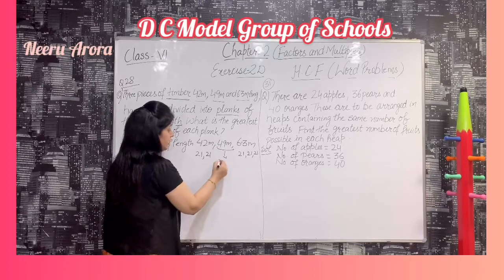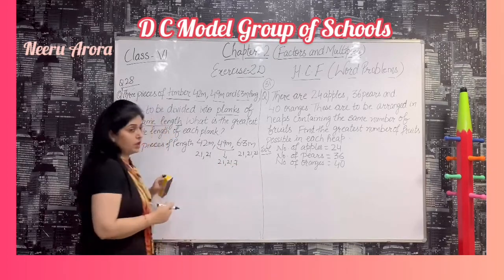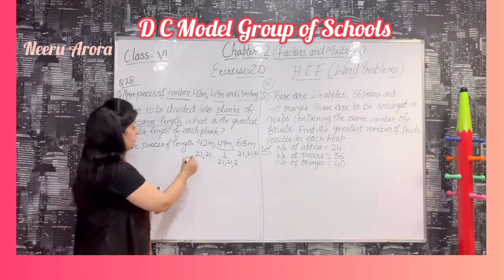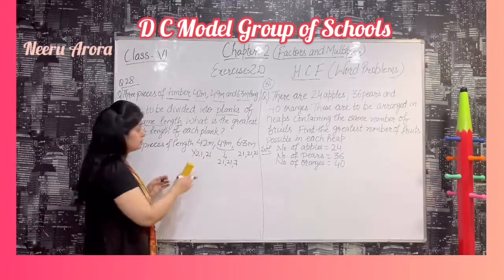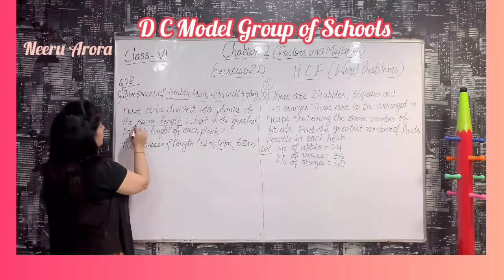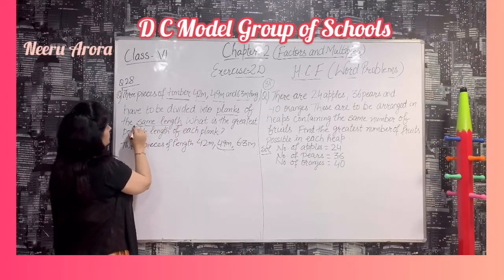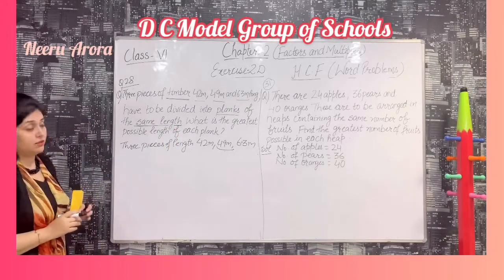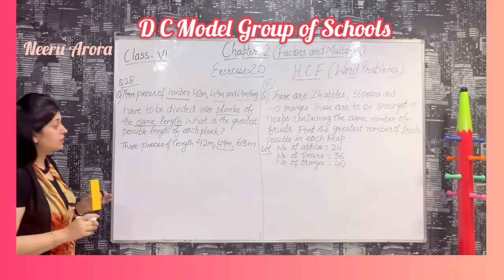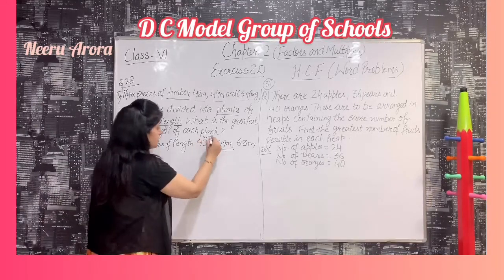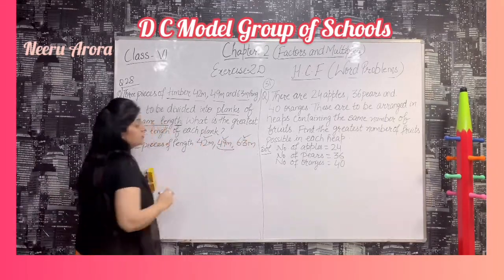When we divide 49 by 21, we get 21, 21, and 7 is left over. So it is not of the same length, and it will not work. Our question is: what is the possible same length? We want a number which divides 42, 49, as well as 63.